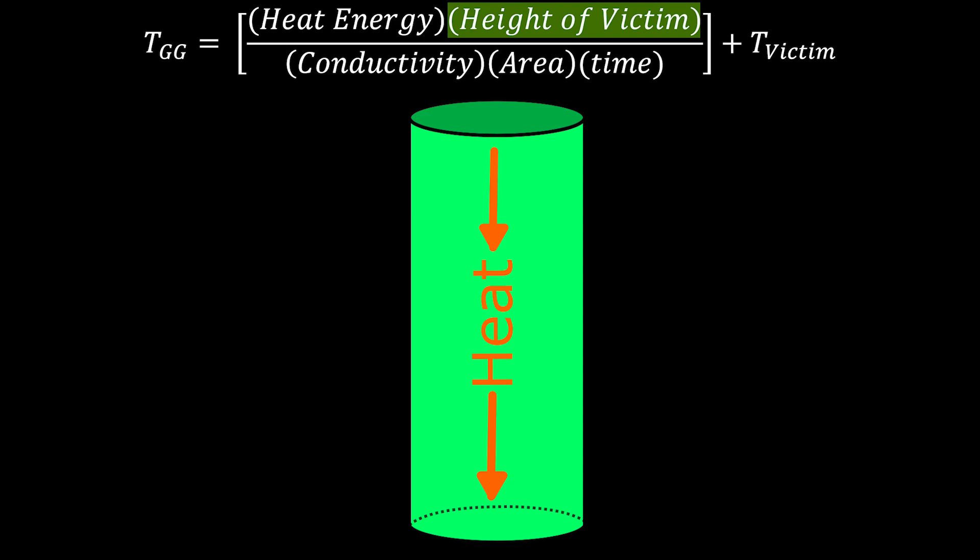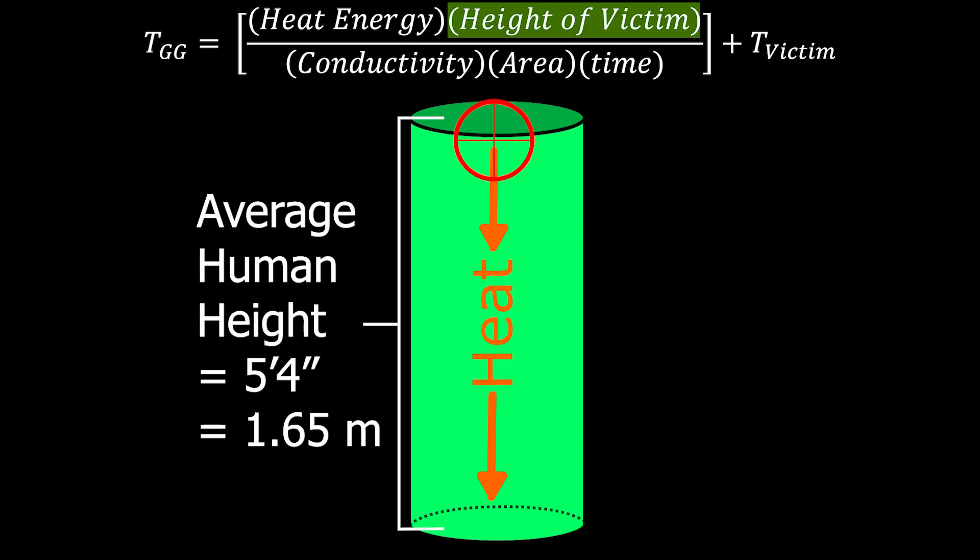To make things even more simple, we will be shooting the guardian in the head and imagining that the heat travels only in one direction, hence the 1D, from top to bottom. So, the height of our meat cylinder is the average height of a human, which is about 5 foot 4 inches, or 1.65 meters. Great.